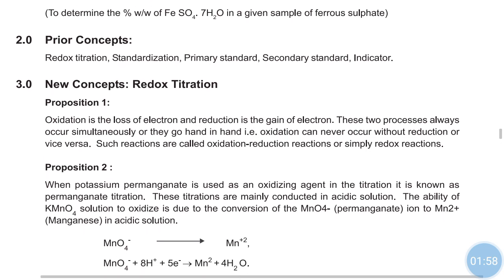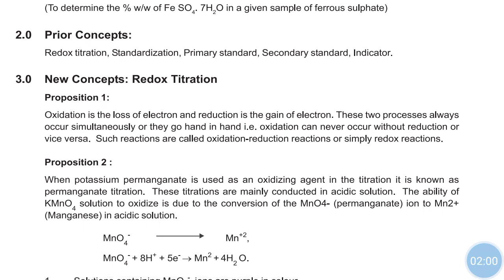We had seen the different types of redox titrations: permanganometry, iodometry, cerimetry, and chromatometry. Out of those, the assay of ferrous sulfate is a permanganometry type of titration.